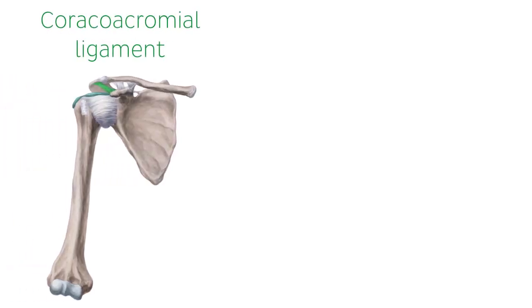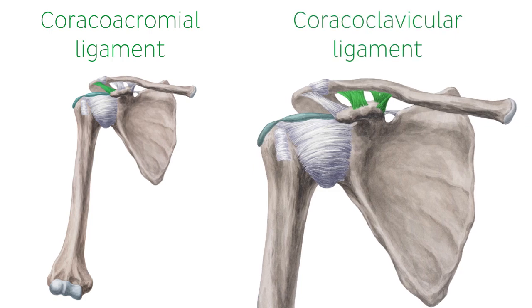This joint is stabilized by two sets of ligaments, the coracoacromial ligament and the coracoclavicular ligaments, which are all highlighted in green on both of these images.